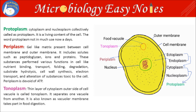Periplasm: the gel-like matrix present between the cell membrane and outer membrane is called periplasm. It includes solutes such as peptidoglycan, ions and proteins. These substances perform various functions in cells like nutrient binding, transport, folding, degradation, substrate hydrolysis, cell wall synthesis, electron transport, and alteration of substances toxic to the cell. Periplasm is devoid of ATP.